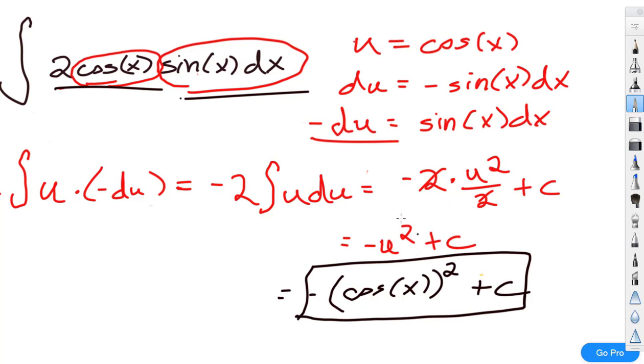So, something that you might want to try to do is try to do this only instead of letting u equal cosine, why don't you try by letting u equal sine and see if you get a different answer. And if you do, go ahead and take the derivative and see if the derivatives match up. Alright, we have one more example we are going to do.